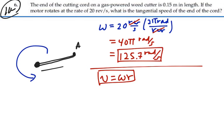In this case, the radius we're talking about is the radius of the weed eater, which is given as 0.15 meters.